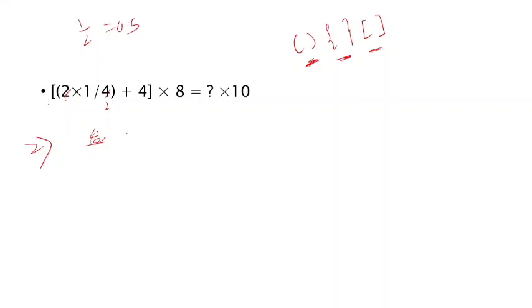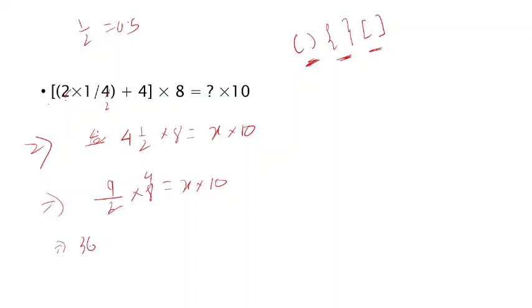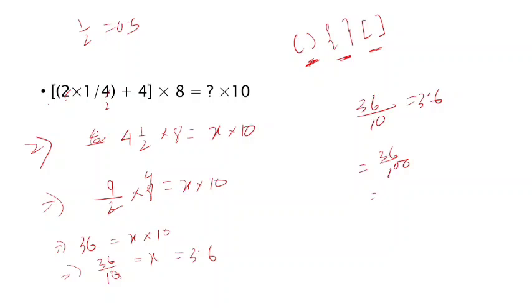So we have 4 and 1 by 2, then into 8. The question mark means x into 10. So 4 and 1 by 2 means 9 divided by 2. So 9 divided by 2 into 8 equals x into 10. Then multiplying, 10 by 2 equals x, so x equals to the calculated value. If 30 to 0 means 2 games take point 1 to 2.